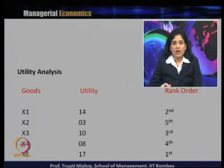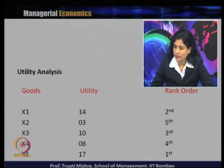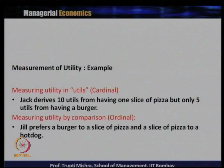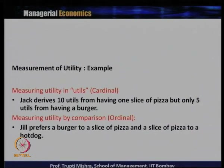For instance, measuring utility in utils is the cardinalist approach: Jack derives 10 utils from one slice of pizza but only 5 utils from a burger. In the ordinalist approach, Jill prefers a burger to a slice of pizza, and a slice of pizza to a hot dog — expressing preferences in order without assigning numeric values.